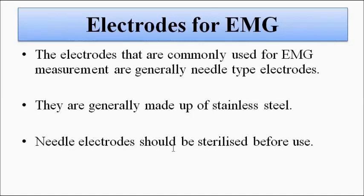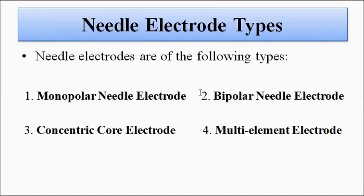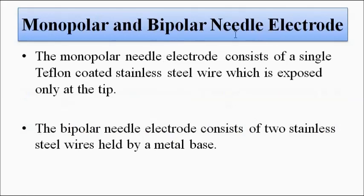As these electrodes are pierced into the body, any electrode must be properly sterilized and disinfected before use so that it does not cause any infection. The various types of needle electrodes used for EMG are the monopolar needle electrode, bipolar needle electrode, concentric core needle electrode, and the multi-element electrode. In this video we will discuss the first three: monopolar, bipolar, and concentric core.